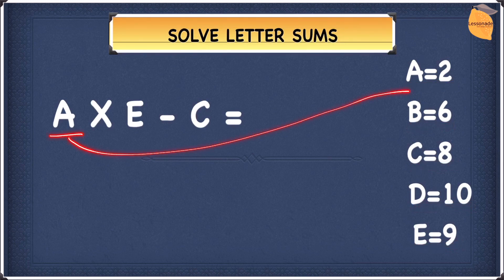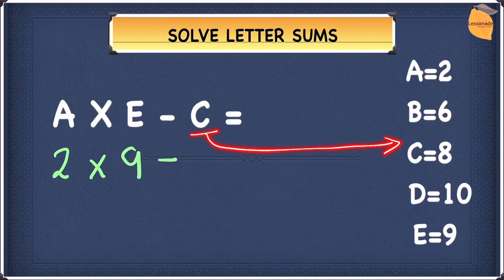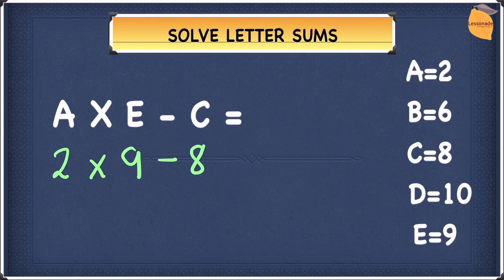A, as you guys could see, is going to be 2. Let's write the 2. We're going to multiply this 2 by E. E is obviously 9. 2 times 9 take away C. C is 8. 2 times 9 minus 8. Let's work this question out from the left. 2 times 9 is 18.